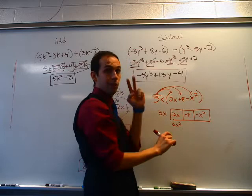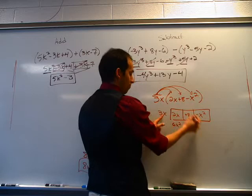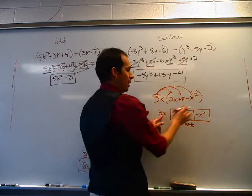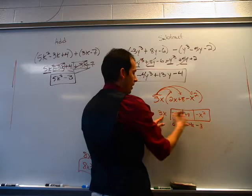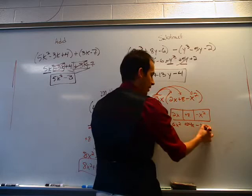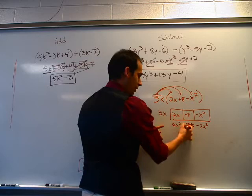And then 3x times negative x squared — that's definitely going to be negative: negative 3, x times x squared. Remember, x to the first power times x to the second power — you add the exponents, now it's x to the third power. So this is plus 24x minus 3x cubed. And this is your answer. Just to clarify, number 13 is just like this — you can use the box method for that.